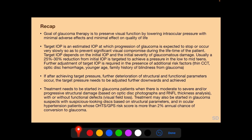To recap the salient points: the goal of glaucoma therapy is to preserve visual function by lowering IOP with minimal adverse effects and minimal effect on quality of life. Target IOP is an estimated intraocular pressure at which progression of glaucoma is expected to stop or occur very slowly so as to prevent significant visual compromise during the patient's lifetime. Target IOP depends on the initial IOP and the initial severity of glaucomatous damage. Usually a 25–30% reduction from initial IOP is targeted to achieve an IOP in the low to mid-teens. Further adjustment of target IOP is required in the presence of additional risk factors such as thin central corneal thickness, optic disc hemorrhage, younger age, and family history of blindness from glaucoma.